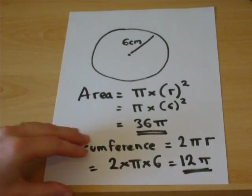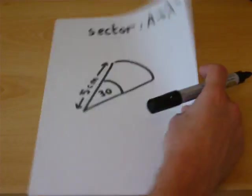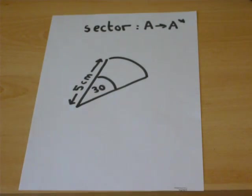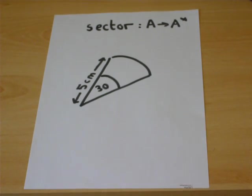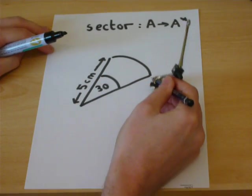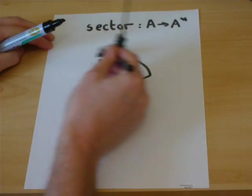For my final example, I'm going to give you a sector, which can often be one of the A or A-star questions, but actually it's very easy. A sector is basically part of a full circle. Try to imagine a circle which extends around this big circle.